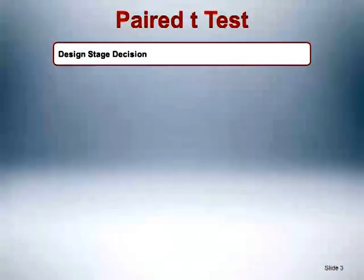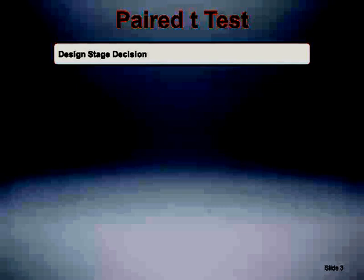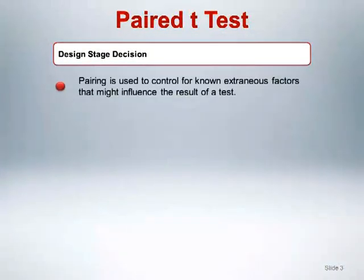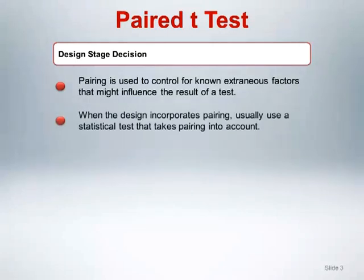The first point to make is that paired data structures should occur by design. Thus the decision to use a paired t-test should be made at the design stage prior to collection of the data. Pairing is used to control for known extraneous factors that might influence the result of a test. When the design incorporates pairing, we usually use a statistical test that takes pairing into account to analyze the data.